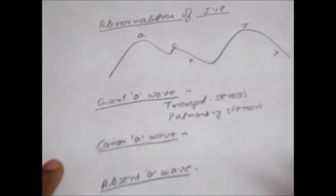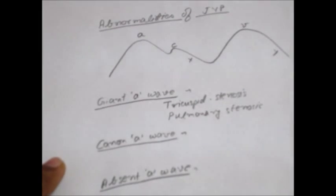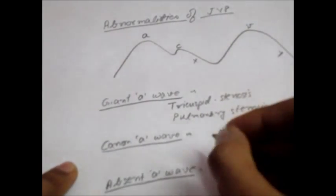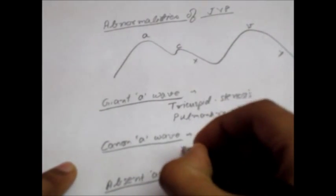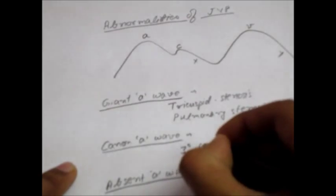Now these are seen in situations like when atria and ventricles contract simultaneously, for example in third degree heart block.